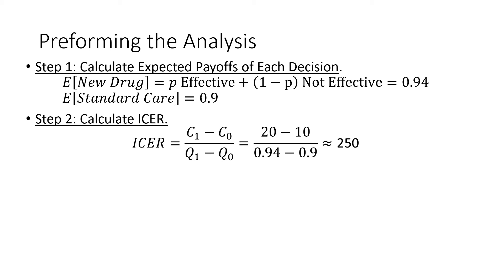Next, we calculate our incremental cost-effectiveness ratio. That's going to be our cost of our new treatment minus our standard care, all over the qualities gained from the new treatment minus that of the initial case. Doing the math, we get our ICER being equal to $250.